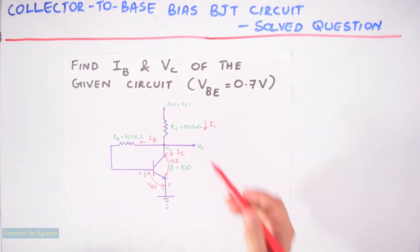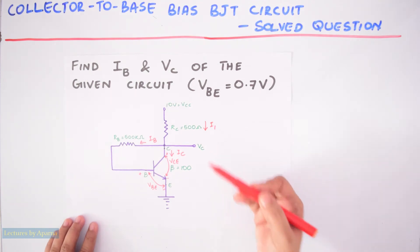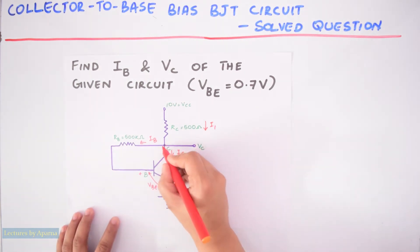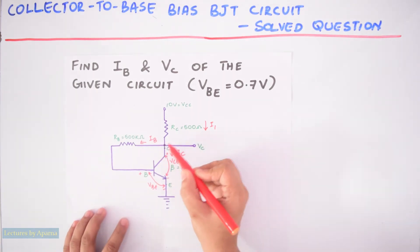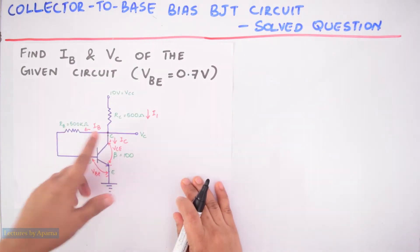We have to find the value of this I1. We are using Kirchhoff's current law for that. Apply Kirchhoff's current law at this node. At this node, the current entering should be equal to current leaving.